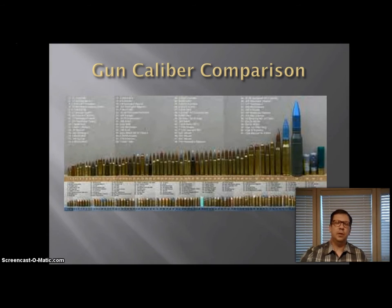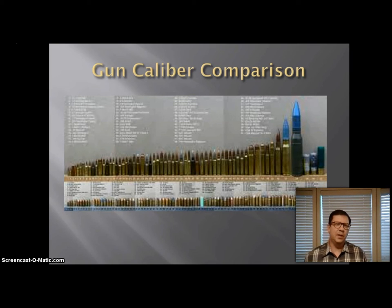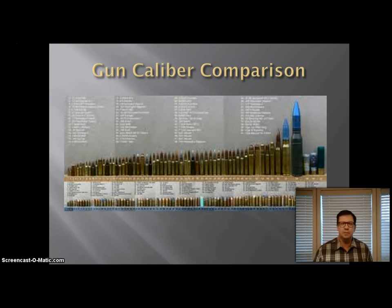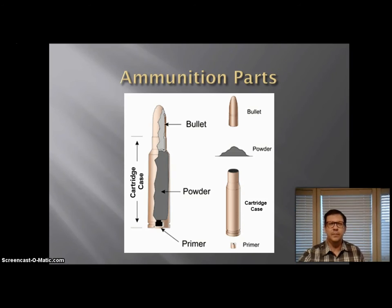Here's a quick comparison chart — we have a poster similar to this on the wall showing all the American gun calibers. You can see the real variety of the different kinds of calibers, bullets, and cartridges that are available.